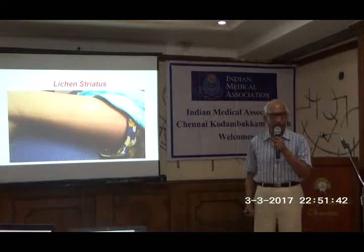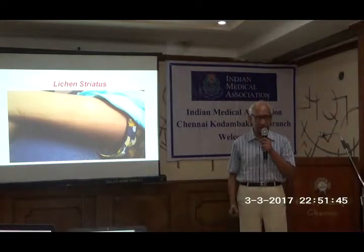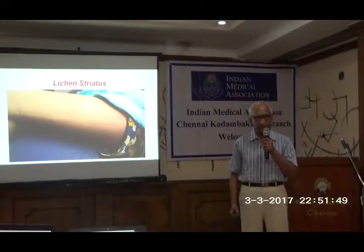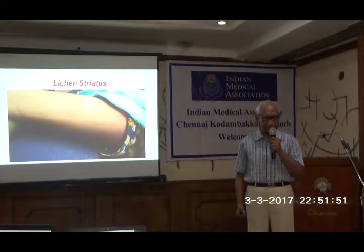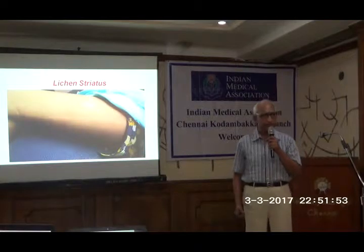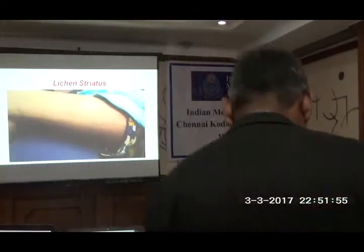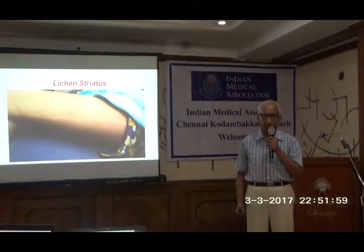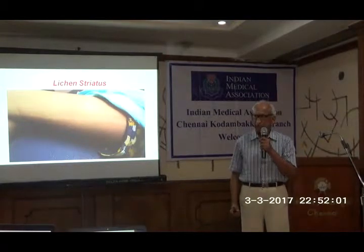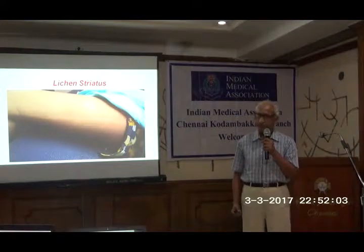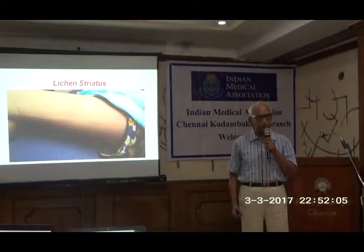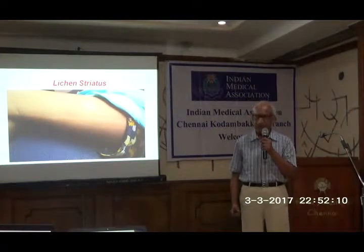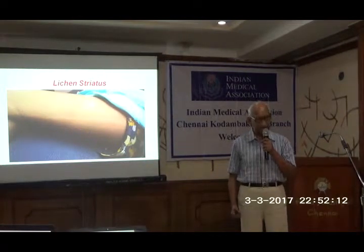The pediatricians among the audience will be very familiar with this condition. Lichen striatus is a self-limiting condition of uncertain etiology. Both genetic and environmental factors are known to play a part. Lesions are papules arranged in a straight line, usually seen in the lower limbs, sometimes in the upper limbs as well.